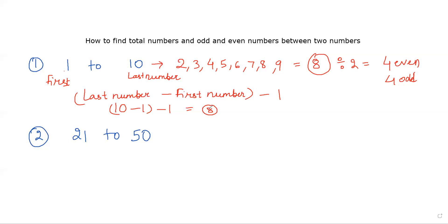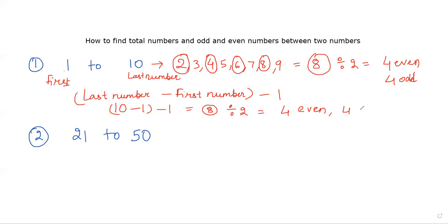As we calculated, the total numbers between 1 to 10 is 8. Half of them would be even — divided by 2 — so 4 would be even. We can circle out the even numbers to verify our answer: 1, 2, 3, 4 would be even and 4 would be odd.